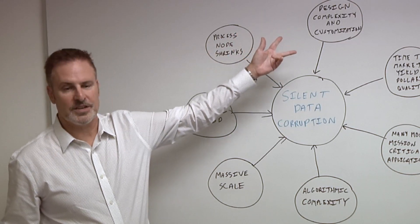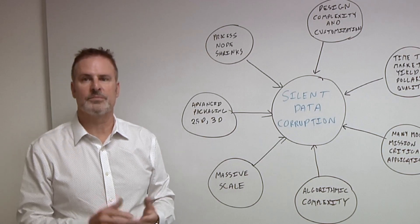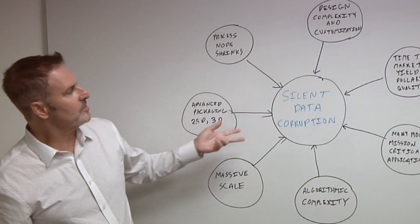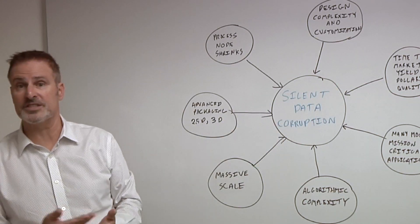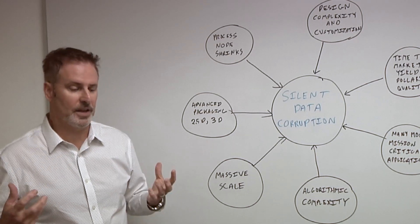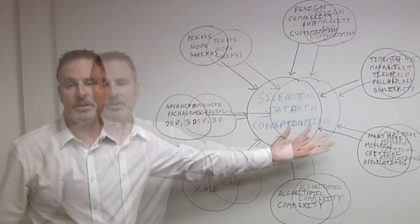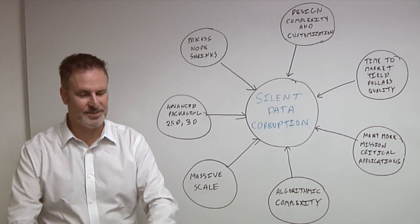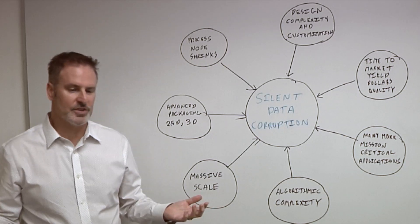Design complexity and customization. We talked about some of the things like the AI chips and other specialized architectures in chip design and the need to turn those out fast, looking at time to market, time to yield, time to dollars, time to quality. The needs are getting continually greater and more pressure putting on our customers. Mission-critical applications. Once again, if your cell phone happens to all of a sudden shut down, it's not a big deal. You just restart it.